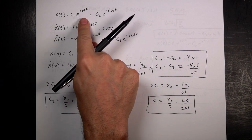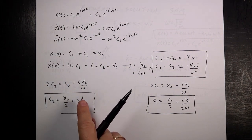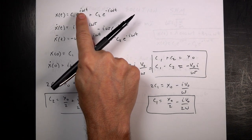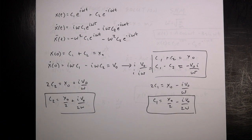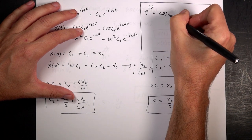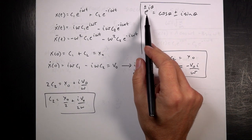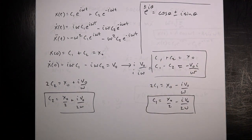Why show that this exponential solution equals the trig solution? Suppose you know x0 and v0 and want to plot the result. You can't directly plot complex exponentials with a standard plotting program. One way around that is to convert the e^(iωt) terms into sines and cosines using the Euler formula: e^(iθ) = cos(θ) ± i·sin(θ).